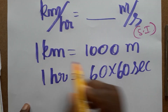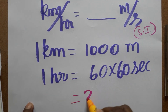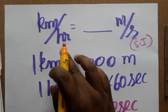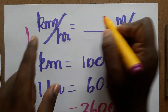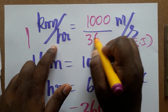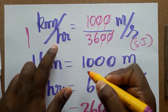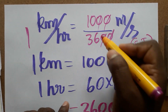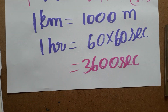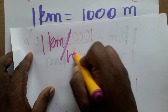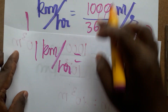One kilometer is a thousand meters and one hour is 3600 seconds. So one kilometer per hour equals one thousand meters divided by 3600 seconds. Cancelling common factors — 1000 over 3600 simplifies to 10 over 36, and dividing by 2 gives five divided by 18.